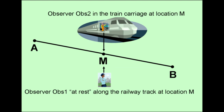For over 100 years now, Einstein introduced his moving train carriage thought experiment regarding the relativity of simultaneity. All those years, Einstein's thought experiment has been really mind-boggling for many people.